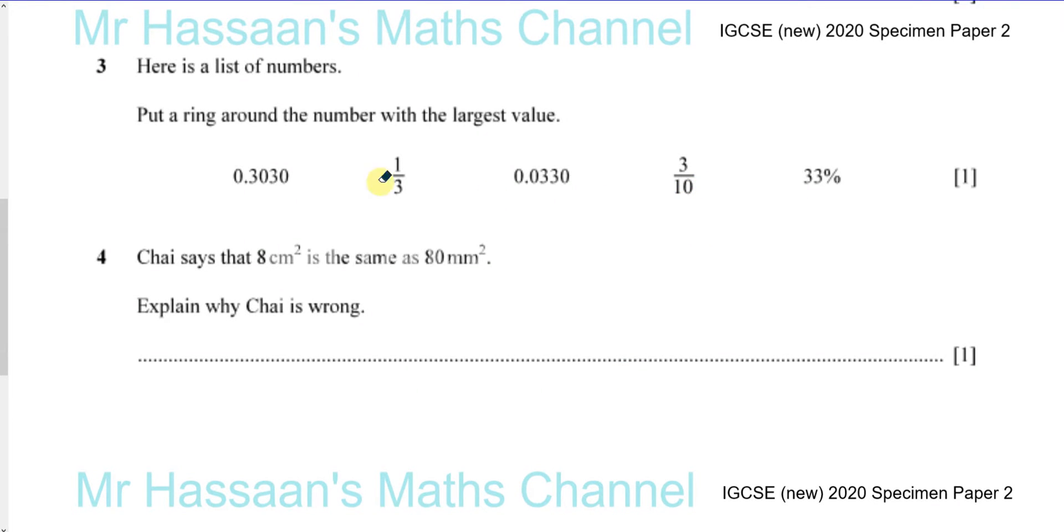Okay, now for question number 3. Here is a list of numbers. Put a ring around the number with the largest value.